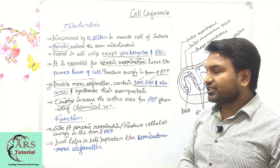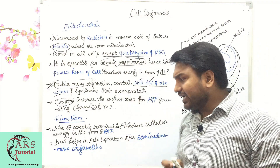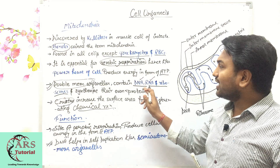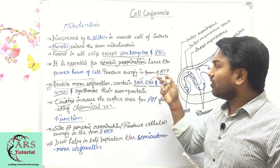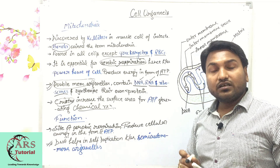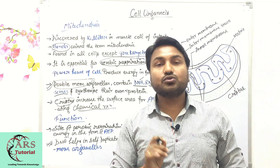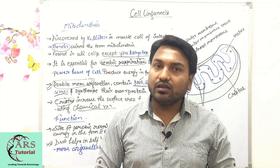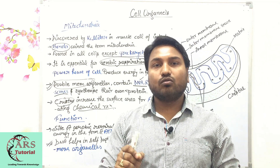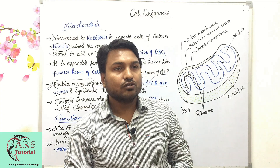Mitochondria is the site of aerobic respiration because it produces energy in the form of ATP. Another important point: the DNA present in mitochondria helps in self-duplication. That is why mitochondria is known as a semi-autonomous organelle — because it has its own DNA, RNA, and ribosomes which help in self-duplication.